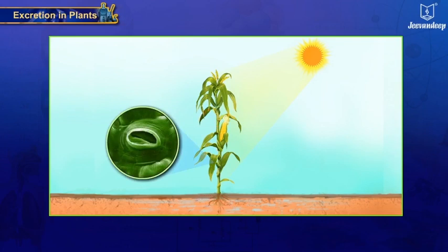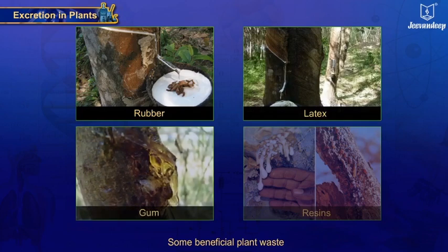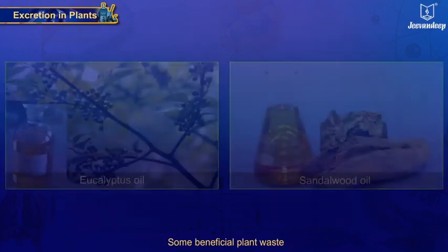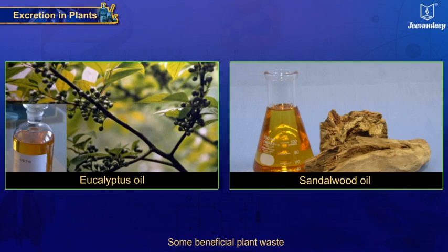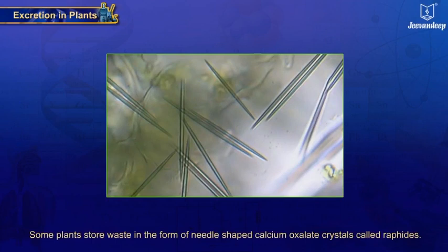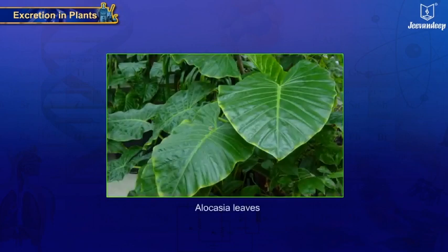Some waste substances are also excreted into the soil around the plants. Some plant wastes such as rubber, water, latex, gum, resins, and essential oils like eucalyptus oil and sandalwood oil are beneficial to human beings. Some plants store waste in the form of needle-shaped calcium oxalate crystals called raphides. These crystals hurt and cause itching — for example, in Alocasia leaves.